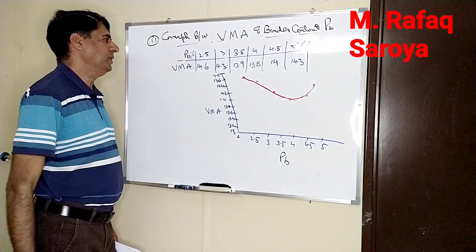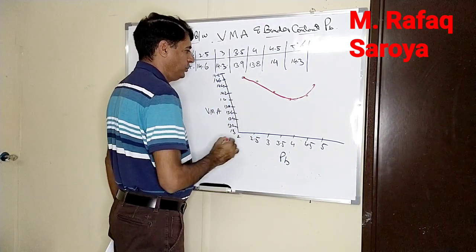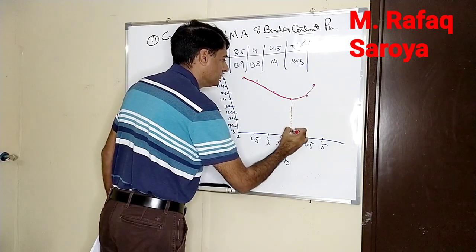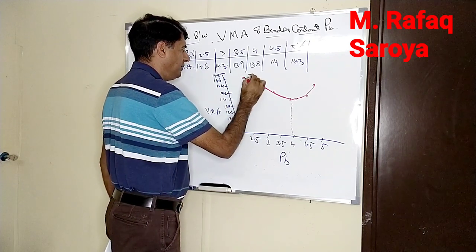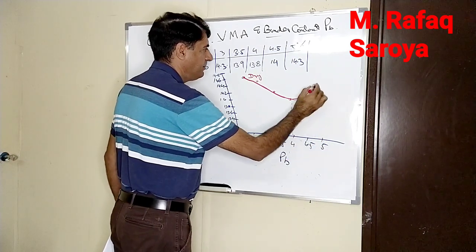Here I would like to tell you one thing: this portion is divided into two parts. On this side, binder content is less - it is known as the dry side. On this side, the amount of binder is more - it is known as the wet side.